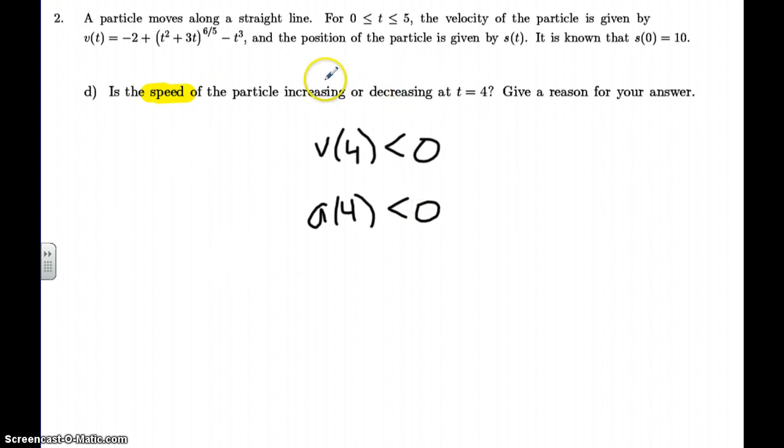So, my answer is the speed of the particle is increasing. And the reason is because the velocity and acceleration are both negative. And that concludes question 2.